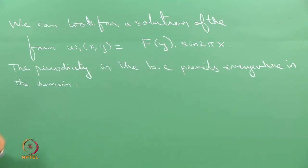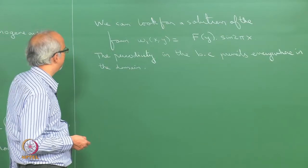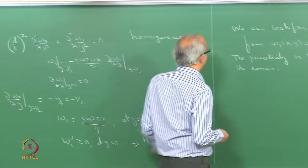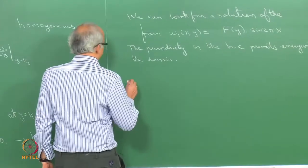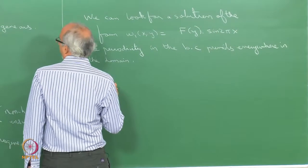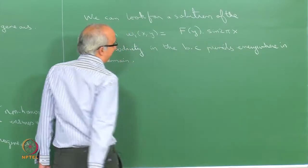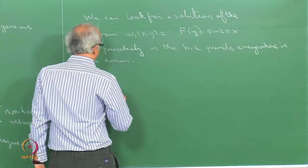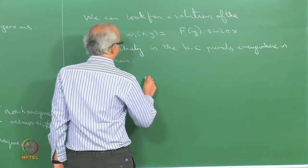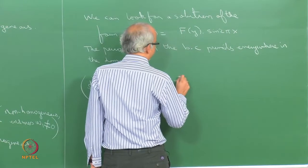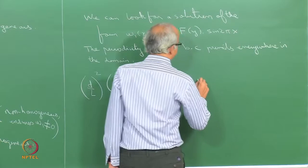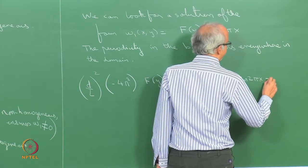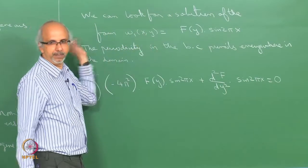Substituting the assumed form into the differential equation, d²w1/dx² gives minus 4π² · f(y) · sin(2πx), and d²f/dy² · sin(2πx). Combined, the equation becomes: (d²f/dy² minus 4π²·f) · sin(2πx) equals 0.